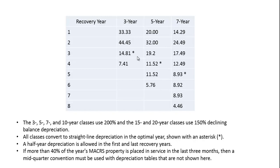For three-year equipment, the switch to straight-line occurs in year three; for five-year, that's year four; for seven-year, that's year five. You'll notice something odd: three-year depreciation has four years in the table. The reason is the half-year convention, which assumes you put the property into use on July 1st — the middle of the year. So you only get a half year's depreciation in the first year, and another half year in the final year. The two middle years are full years, which adds up to three years total. Similarly, the five-year schedule spans six years, and the seven-year schedule spans eight years.